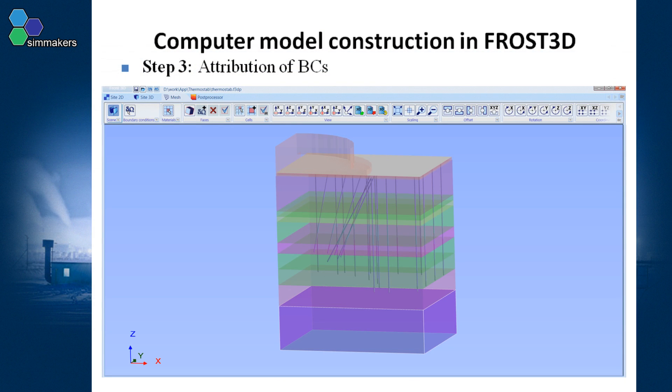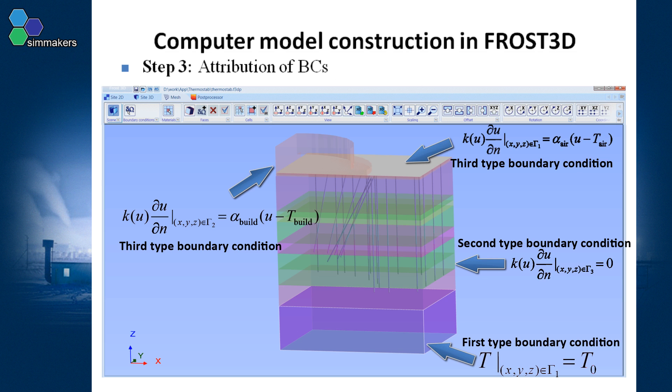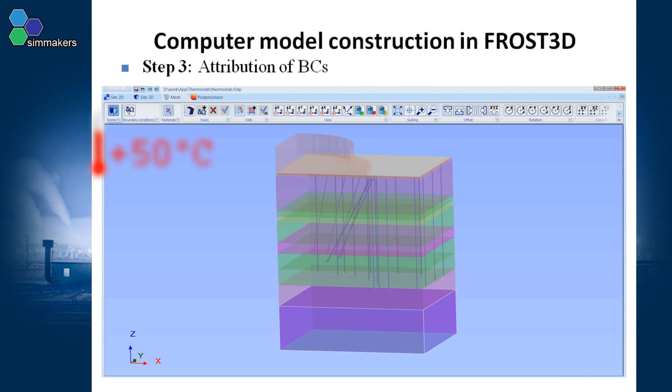In this step, boundary conditions are set. Boundary conditions may be of the first, second and third type. For this particular problem, the boundary condition is of the third type with the temperature parameter of plus 50 degrees Celsius set on the soil surface.